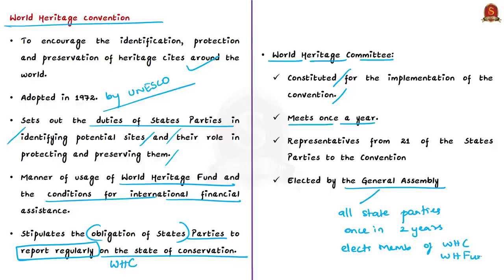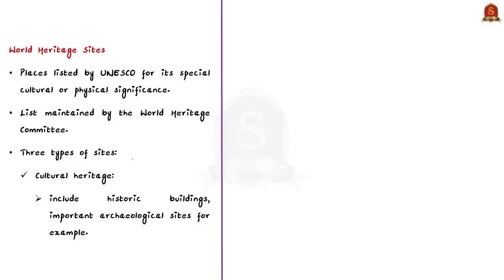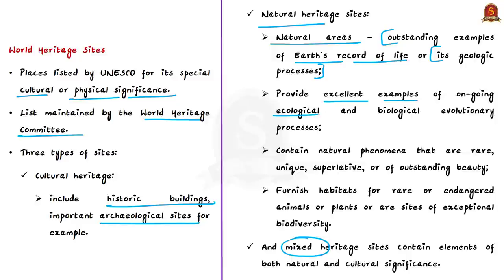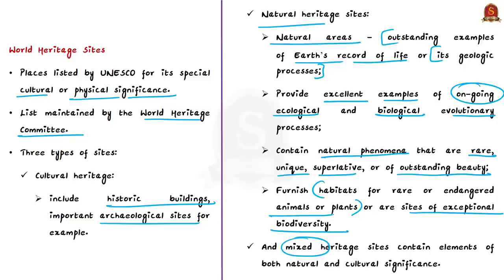World Heritage Sites are places listed by UNESCO for their special cultural or natural significance. The list is maintained by the International World Heritage Programme administered by the UNESCO World Heritage Committee. There are three types: cultural sites (including historic buildings and important archaeological sites), natural sites (restricted to natural areas providing outstanding examples of Earth's geological processes, ongoing ecological and biological evolutionary processes, natural phenomena of outstanding beauty, or habitats for rare/endangered species and biodiversity), and mixed world heritage sites that include elements of both natural and cultural significance.